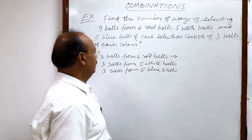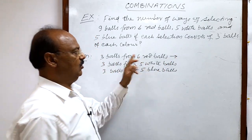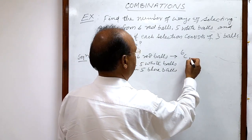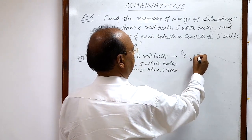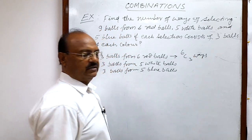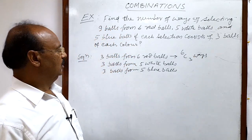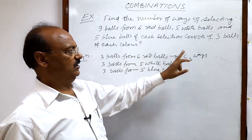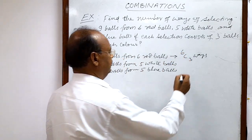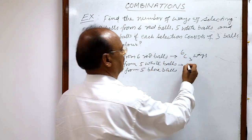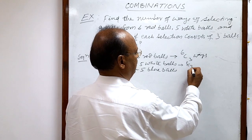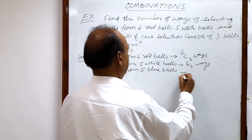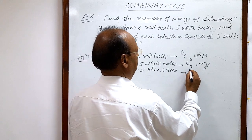How can we evaluate the selections? Choosing 3 balls from 6 red balls can be done in 6C3 ways, since the total number of red balls is 6 and we have to select 3. Similarly, choosing 3 from 5 white balls is 5C3 ways, and choosing 3 from 5 blue balls is also 5C3 ways.